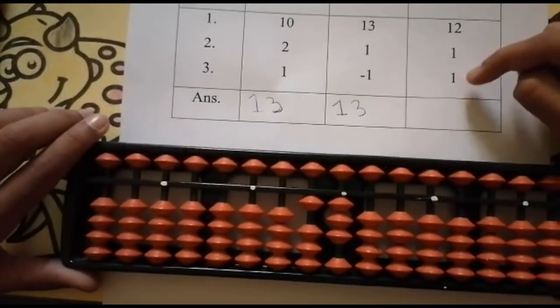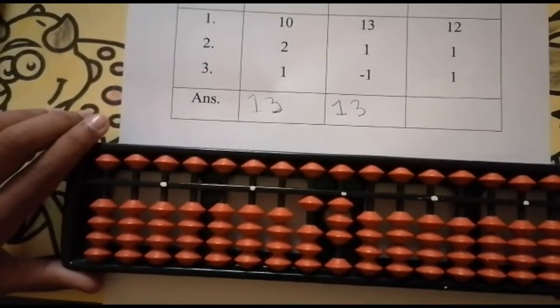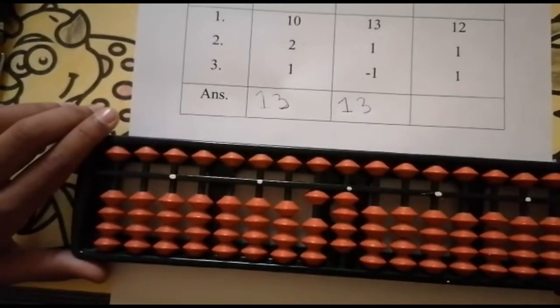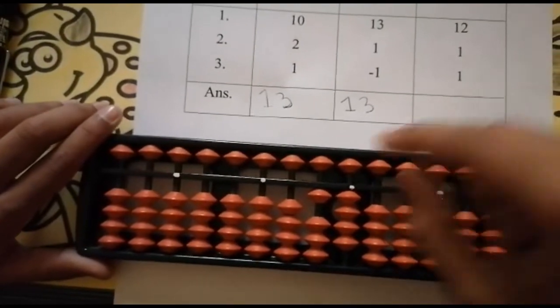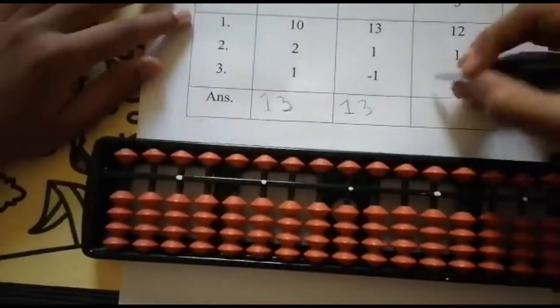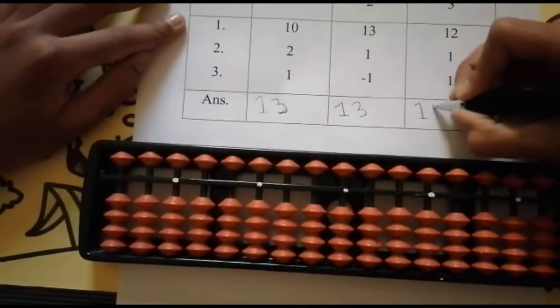The last number is 1. Can we add 1? Yes, there is 1 bead balanced. Add 1. Keeping the finger, got 14. And the answer is 14.